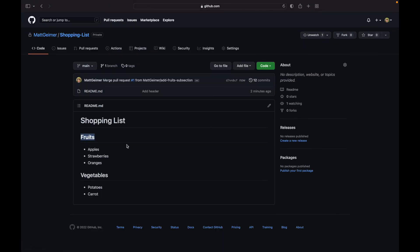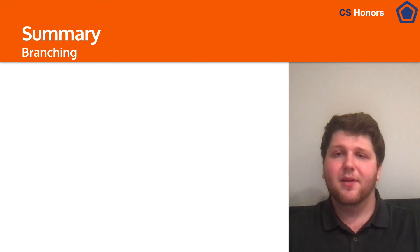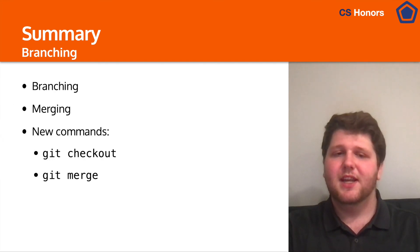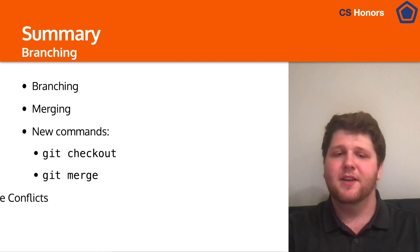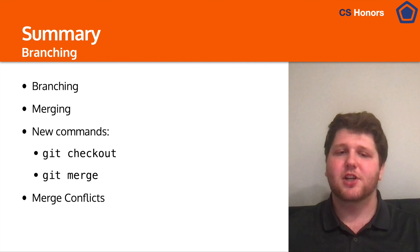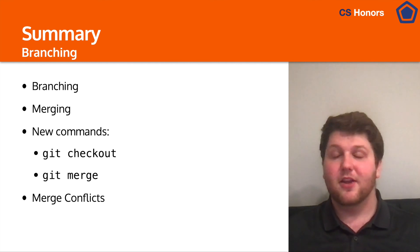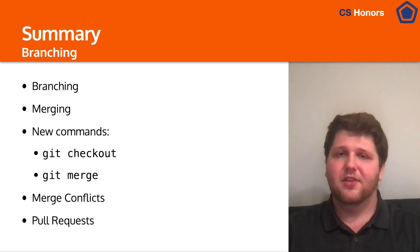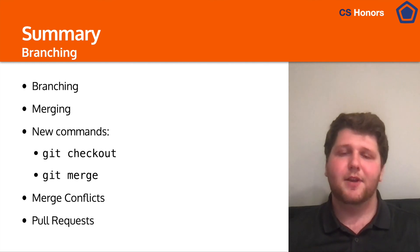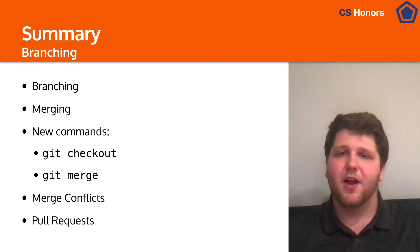So in summary, in this video we talked about branching, merging, and the new commands associated with them — including checking out and merging — as well as merge conflicts, which come up when two branches have both changed the same line and you try to merge them, as well as pull requests. All of this together shows how you can work with a larger team using Git and should hopefully make it a lot easier to work in a group project setting.